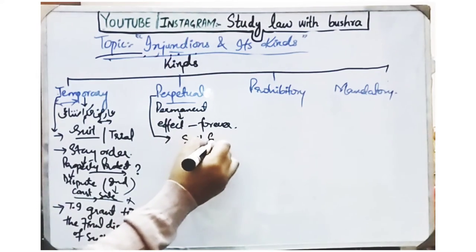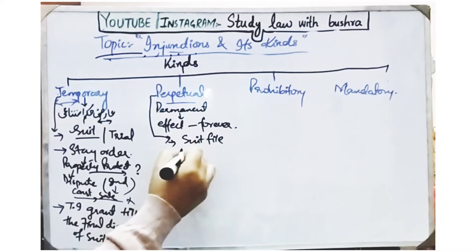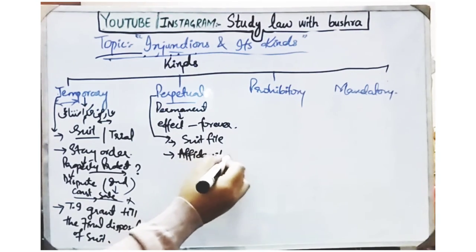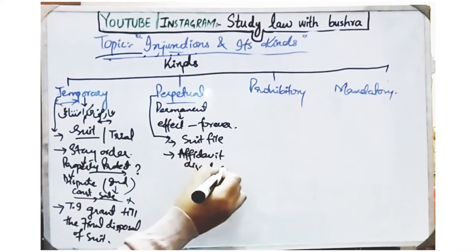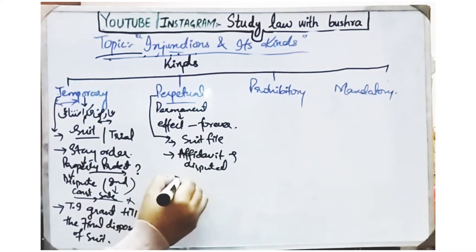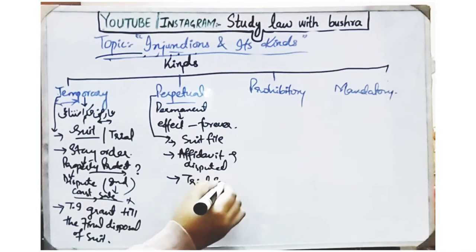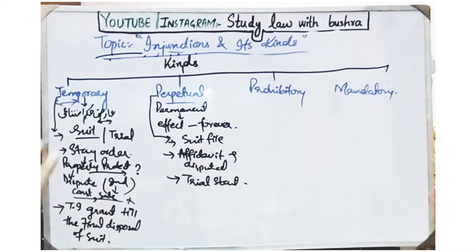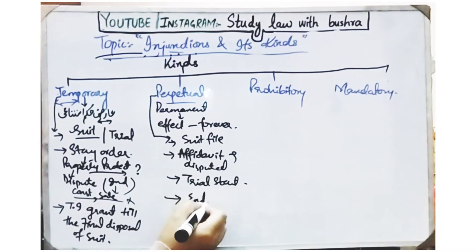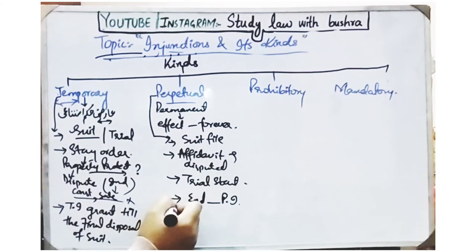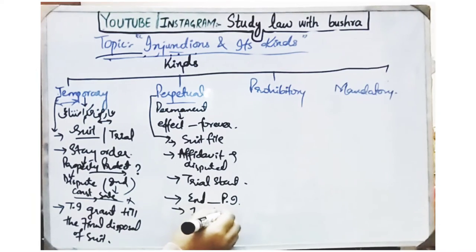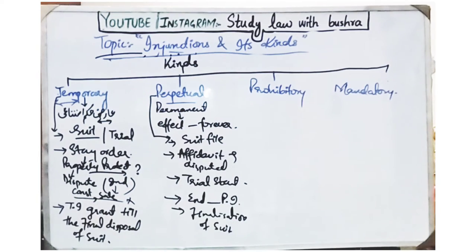For permanent injunctions, you have to file a suit with a proper affidavit, you have to explain to the court that this is the disputed property. The suit goes to trial, the trial starts, evidence is recorded, and the court decides what was the matter in question. So when the final decision comes and the court issues a permanent or perpetual injunctions order, that is the perpetual injunctions — it is the final decision of the case.